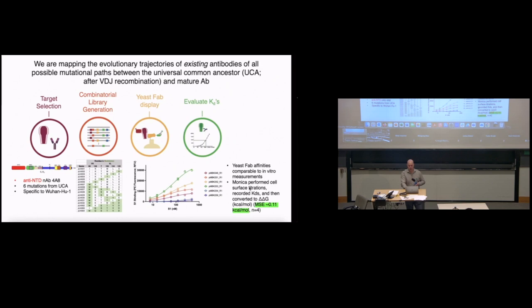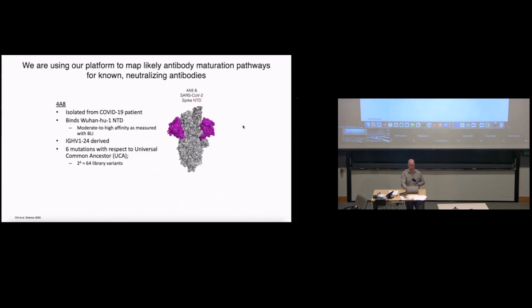We use a yeast fab display platform to express this on the surface of yeast. Then we perform isogenic cell surface titrations. What I'm plotting here is fluorescence that correlates with binding of the protein as a function of the concentration of the protein. You get a saturation curve or an isotherm binding curve. From that, the half-maximal response is your KD. We can evaluate the dissociation constant or KD for each of those 64 variants. Monica in my lab did this four times with biological replicates and converted this to delta-delta-G or a Gibbs free energy change in binding upon mutation for each of those 64 variants.